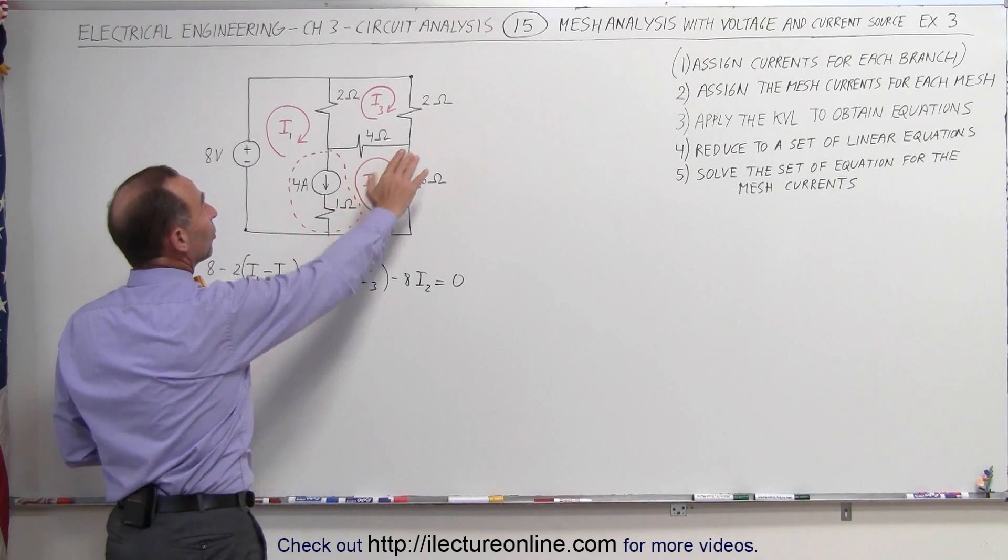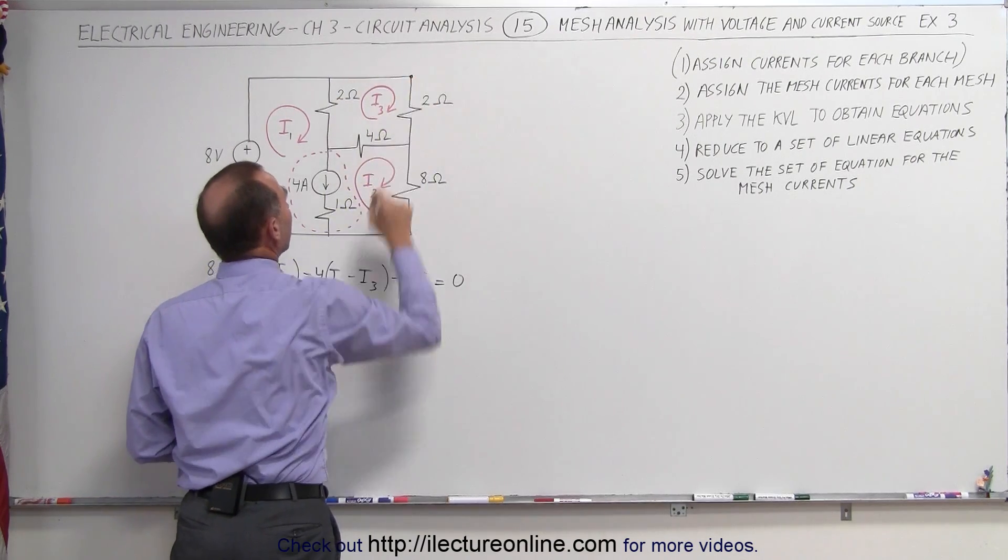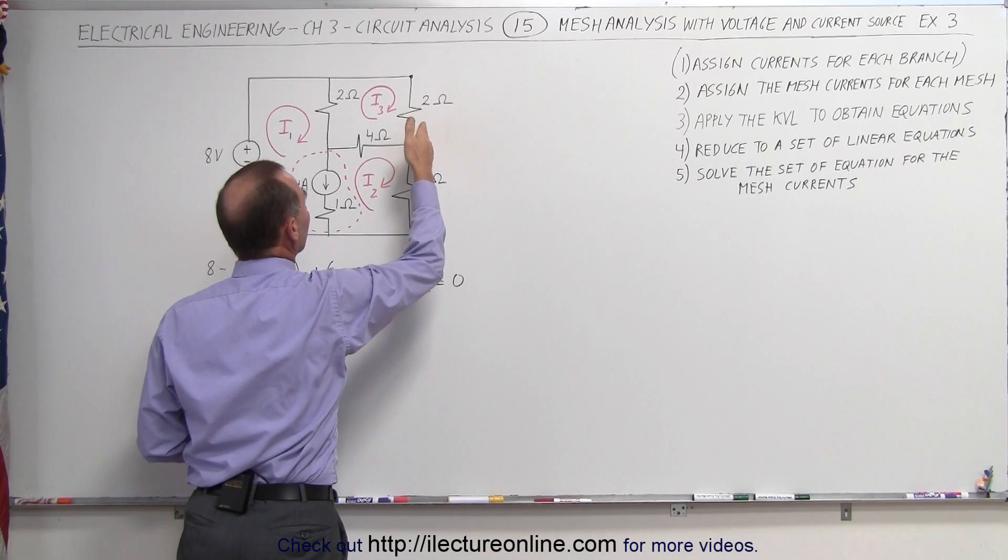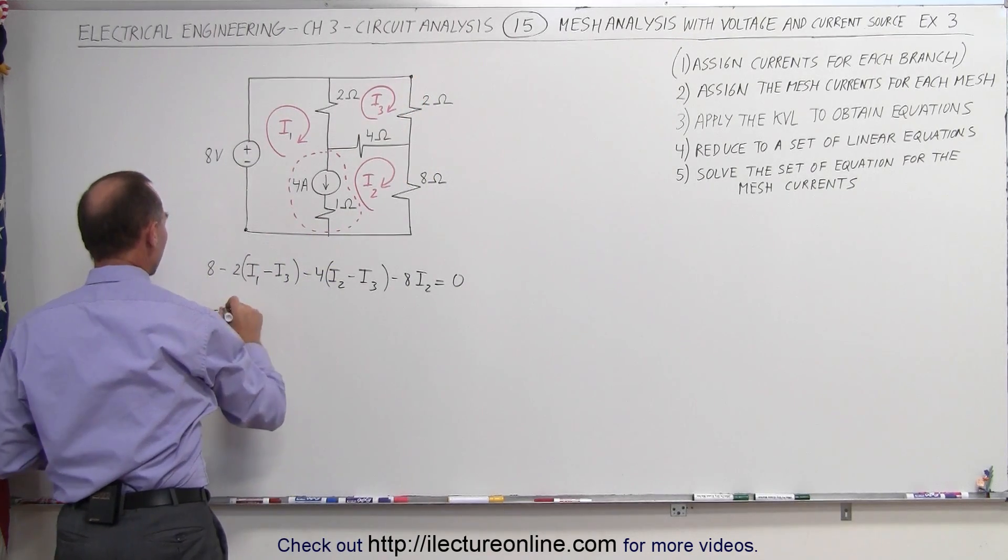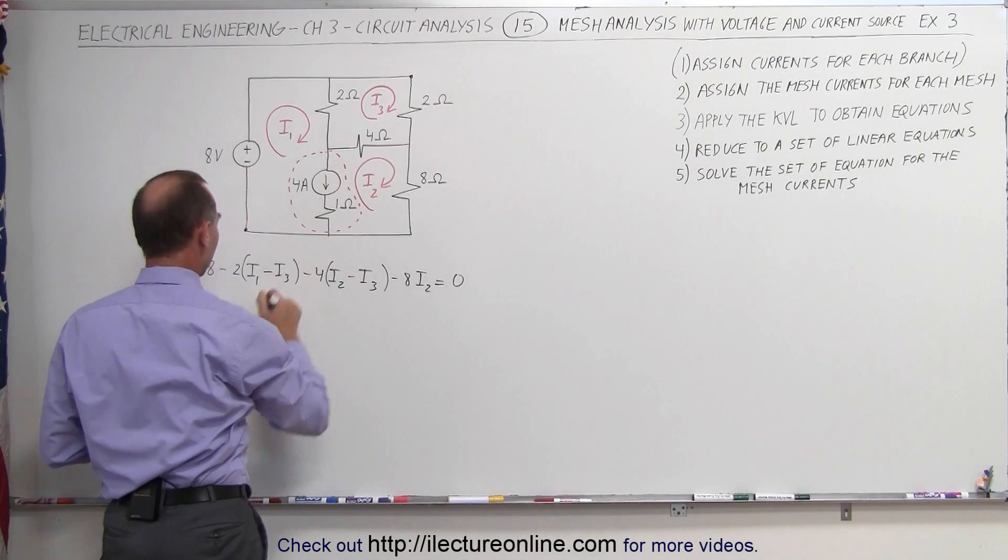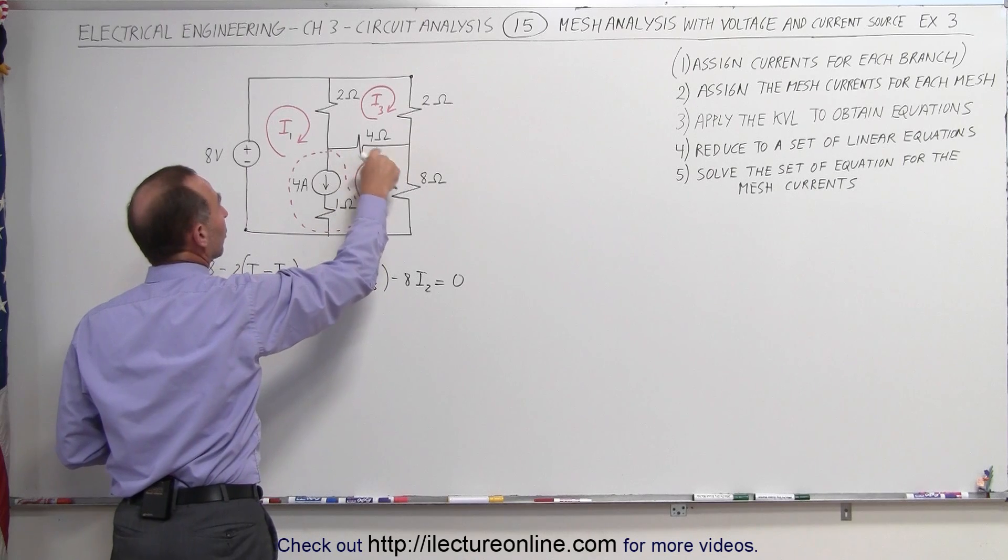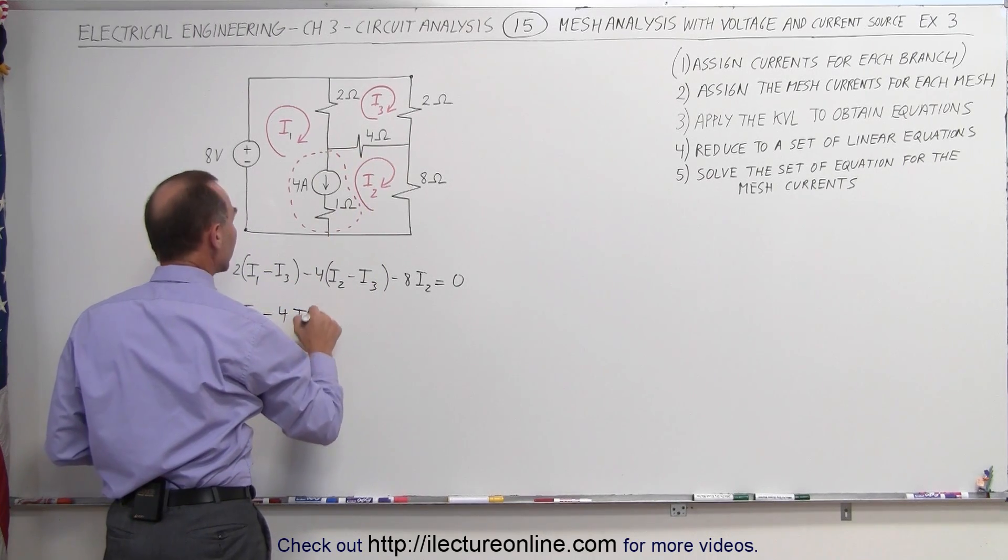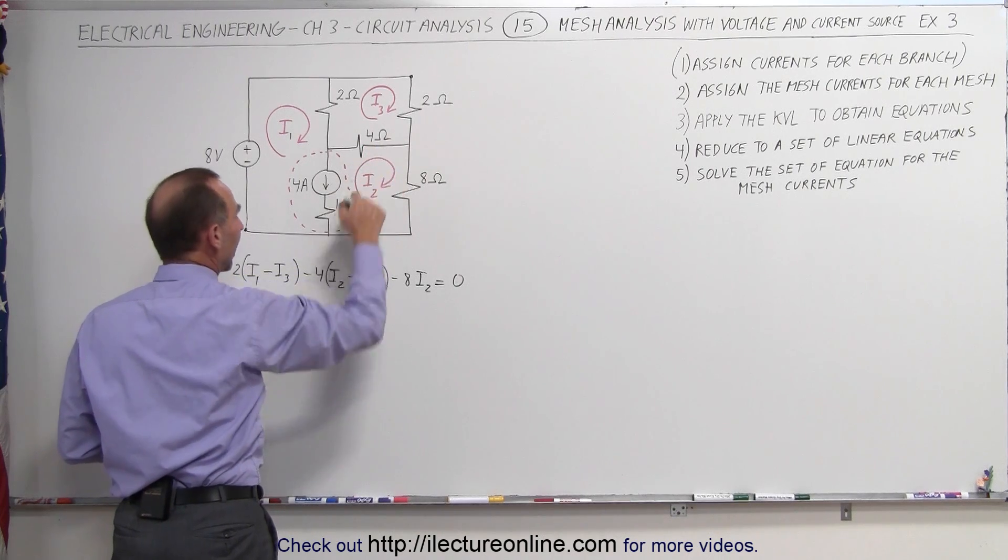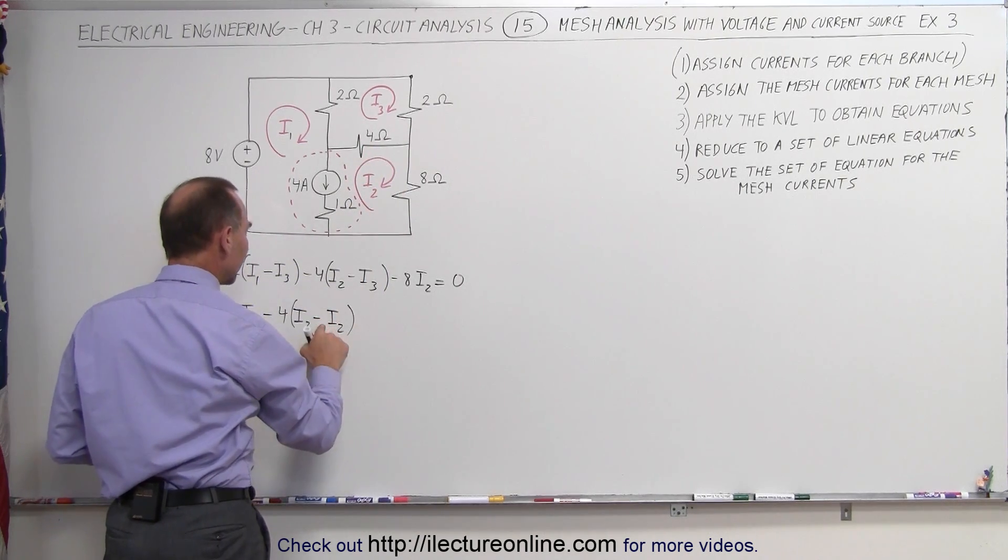Our second equation will be obtained by going around this loop, starting at the corner up here. I come across a 2 ohm resistor, that will be a voltage drop, that's minus 2 times the current I3. Coming around the corner across the 4 ohm resistor, that's a voltage drop, minus 4I3, but we have a voltage rise relative to I2. I subtract I2 from that.